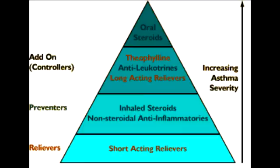So now as we know bronchoconstriction is mediated by the inflammatory process and the parasympathetic tone, you have to use treatments to inhibit these pathways in order for them to be effective in asthma treatment.